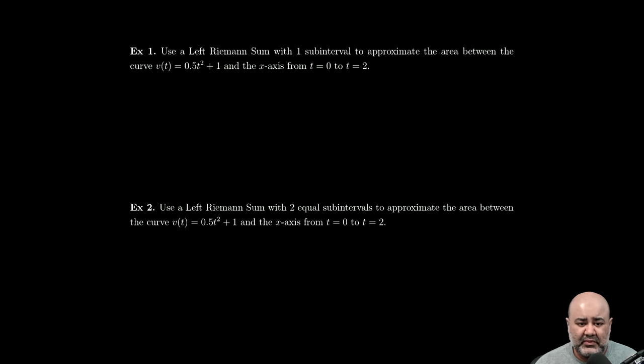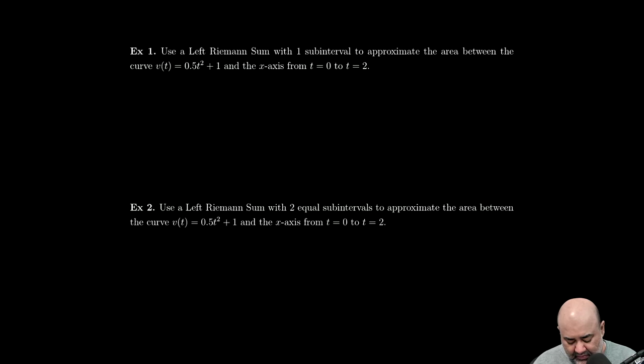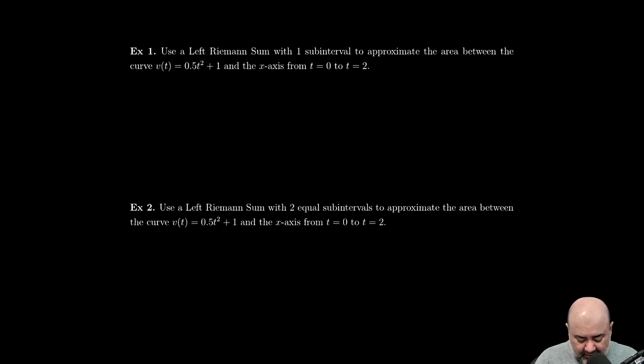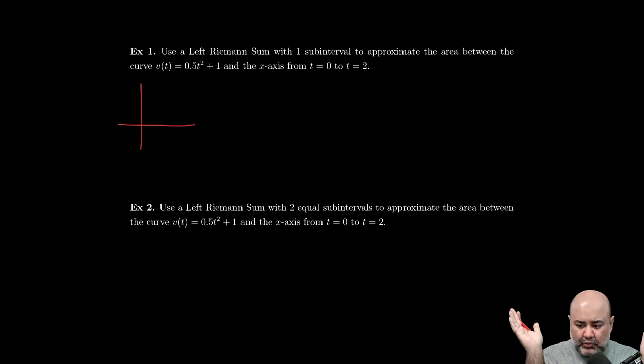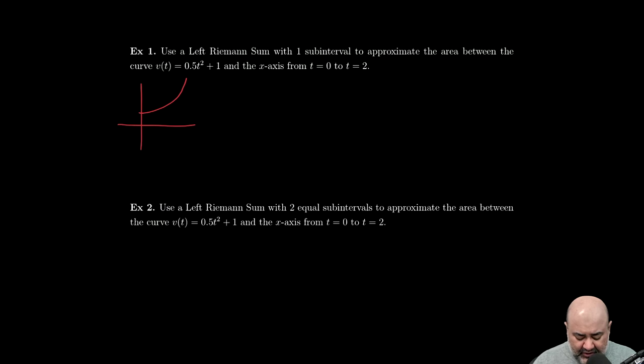The theory doesn't really get tested so much, but computationally these problems are tested quite frequently on the test. So here we want to use a left Riemann sum, or left endpoints, with one sub-interval. So you really just have one rectangle to approximate the area between the curve v(t) = 0.5t² + 1, the x-axis, and t = 0 to t = 2. My recommendation is always just graph it if you can. So we know that it'll be a t squared, so it'll be a parabola. 0.5 times t² will sort of make it broader, it opens it up, and then plus 1 will move it up by 1.